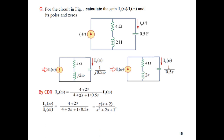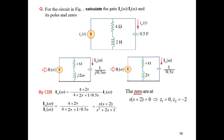Rearranging gives us the transfer function. After simplification, this is the final result. For zeros, we put the numerator equal to zero: s = 0 gives z1 = 0, and from the other factor we get z2 = −2. These are the two zeros of this transfer function.